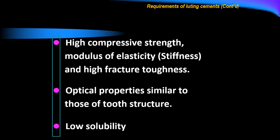Luting cement must also have high compressive strength and a high modulus of elasticity to prevent fracture under the cemented restoration. Additionally, luting cement must have optical properties similar to those of the tooth structure. When cementing aesthetic restorations such as ceramic restorations, the cement must have the same color match as the restoration and the tooth, to prevent any change in the color of the final restoration.